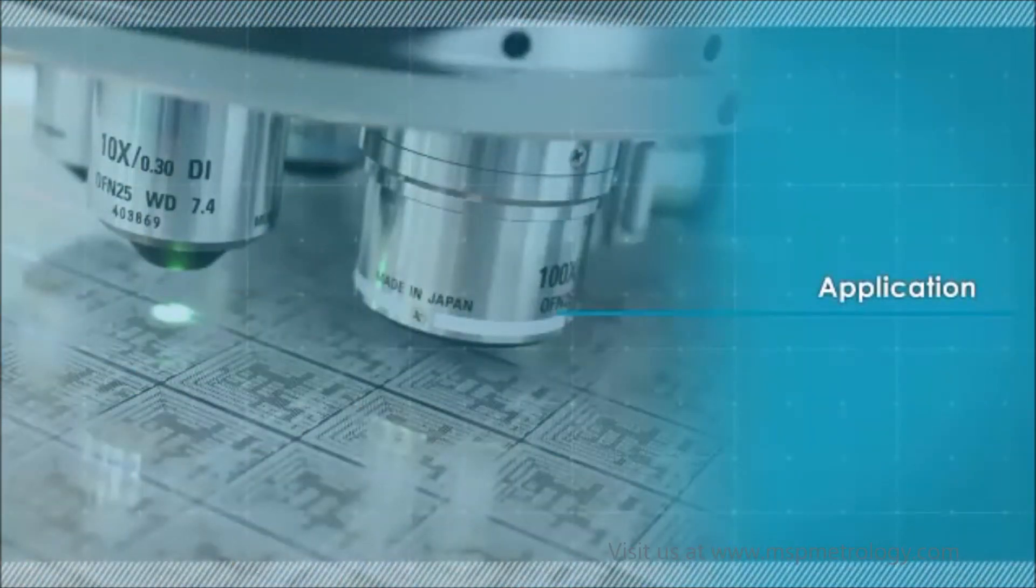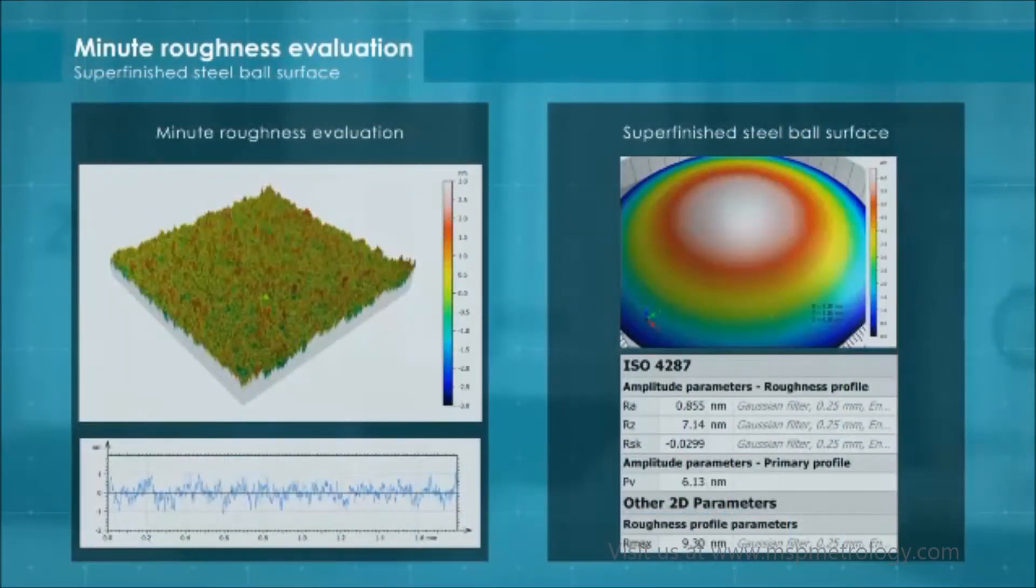Here are some actual application examples. This is the evaluation of a semiconductor wafer and super-finished steel ball surface. Nano-level fine roughness measurement can be accurately performed by the Optscope that uses the principles of white-light interference.